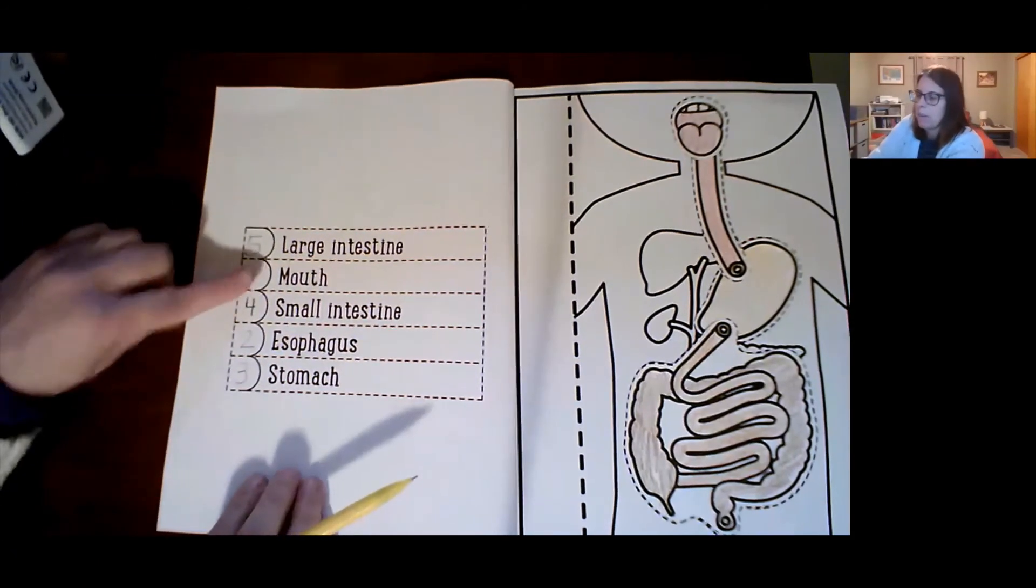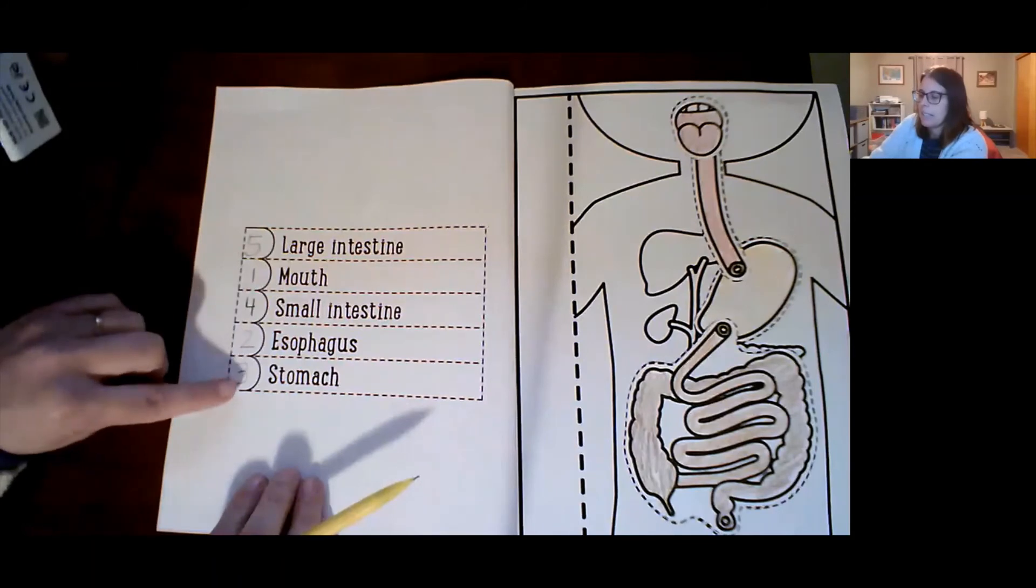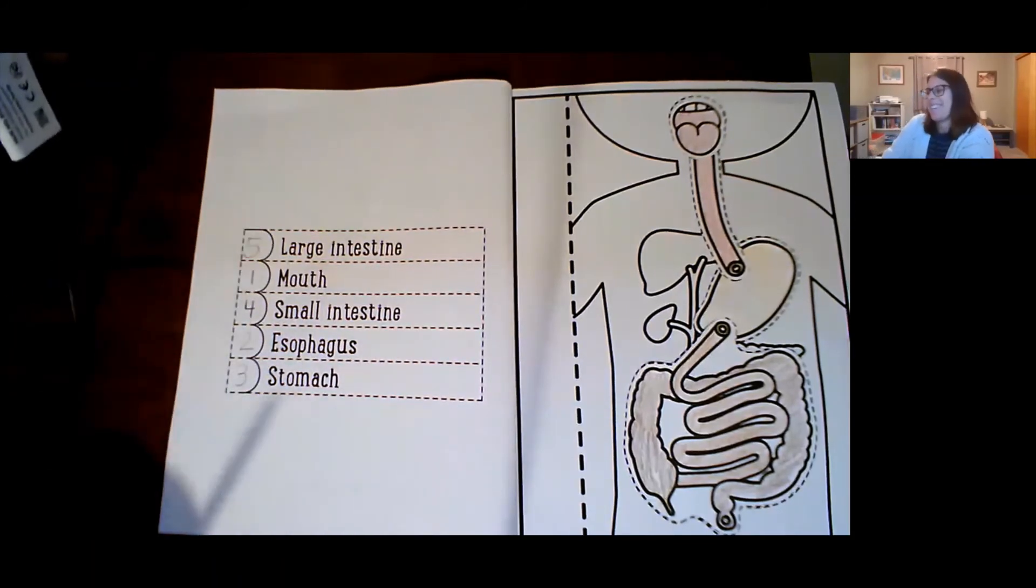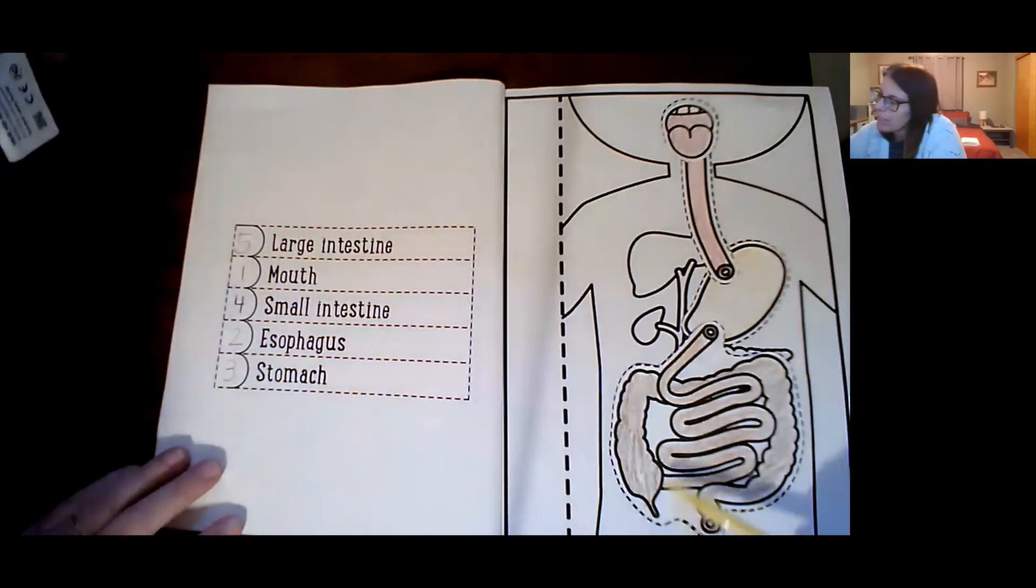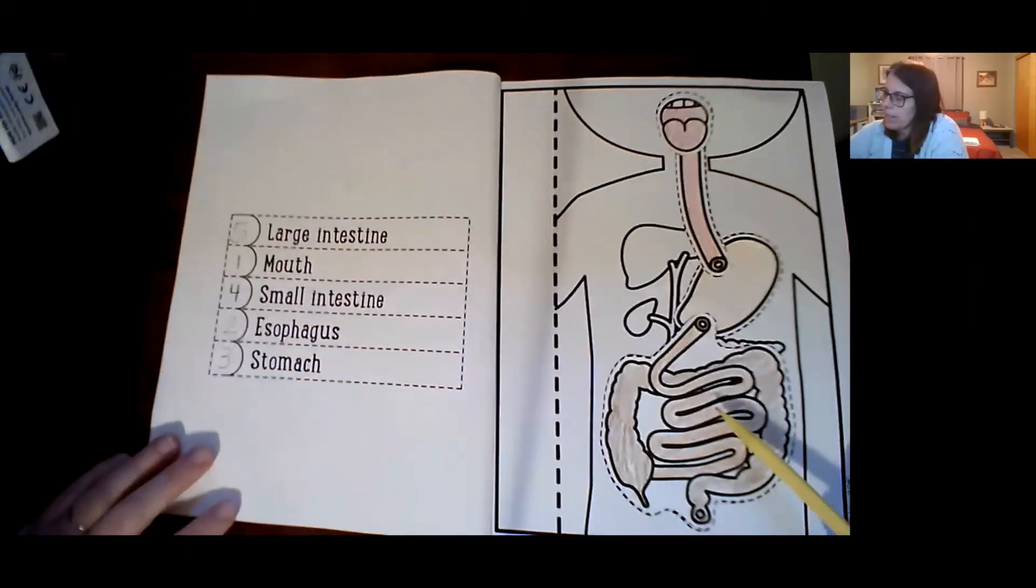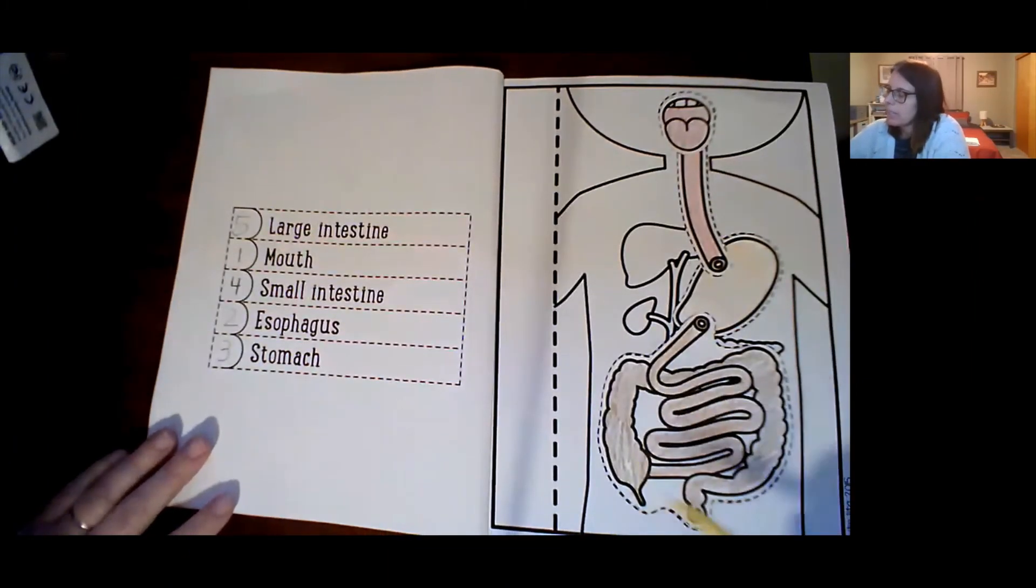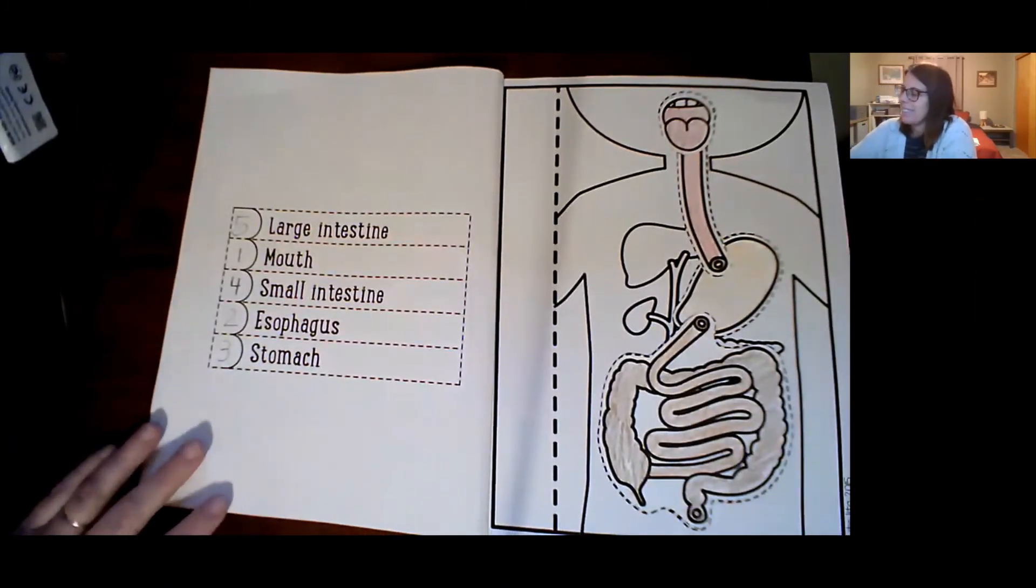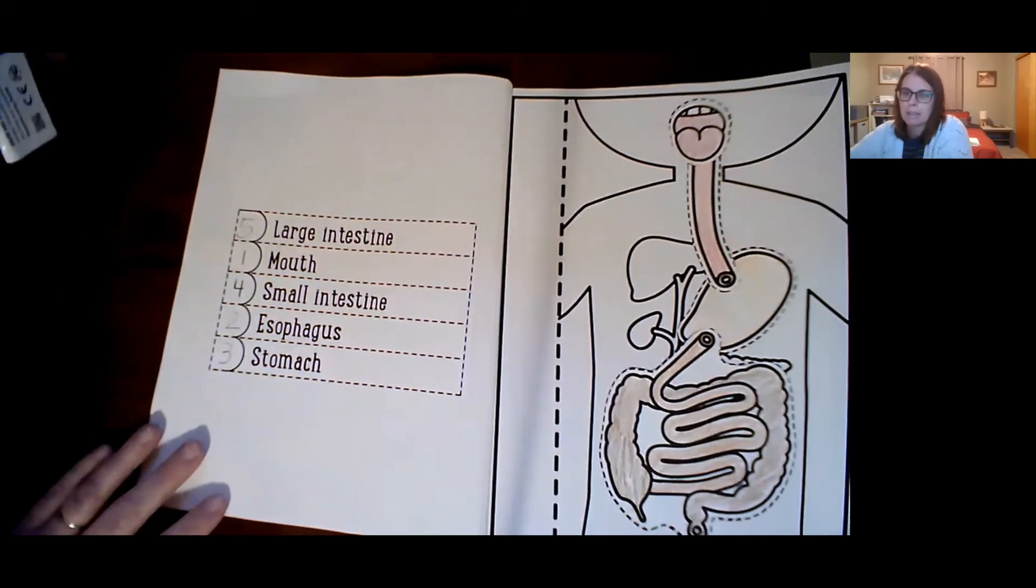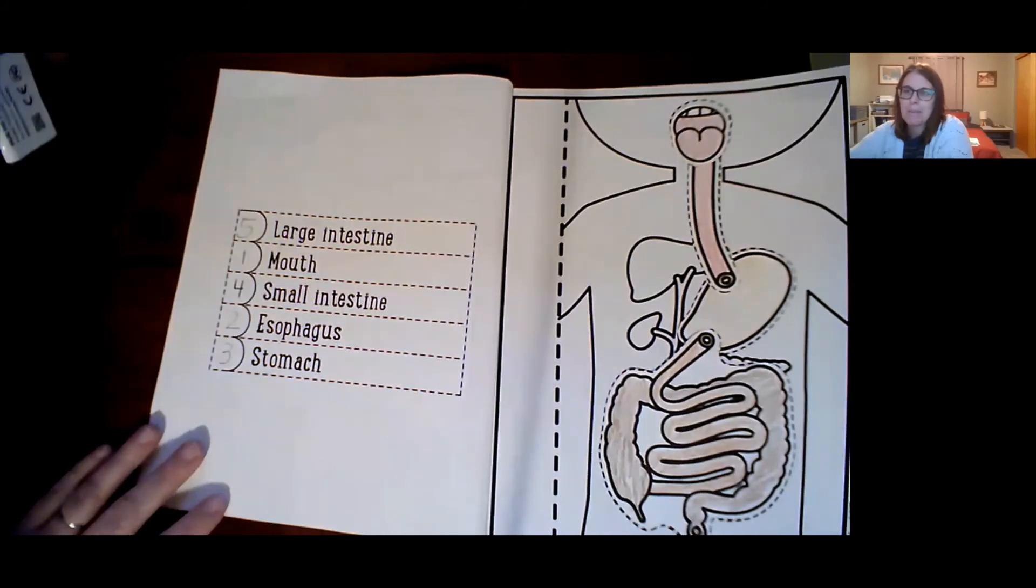Okay. So then we can look at our numbers. Mouth, esophagus, stomach, small intestine, large intestine. And there's our labels for our parts over here. Mouth, esophagus, stomach, small intestine, large intestine. Wow. It's so neat. It's just, it's absolutely amazing. So amazing.